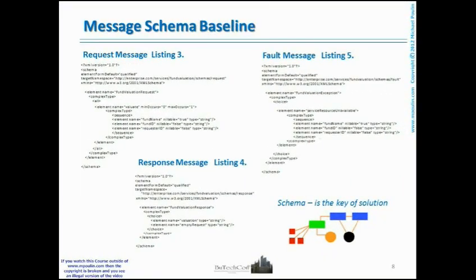Let's look at the messages closer. In our example, a web service uses the same port, endpoint, and port type. The port type always contains the same operation with the same basic request, response, and failure messages. In listings 3, 4, and 5, we find XML schemas for the request message, the response, and the failure messages. The business action for fund valuation is represented by the element Valuate. It contains three sub-elements that detail the action by specifying a fund name as well as the fund and requester identifiers.